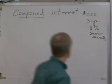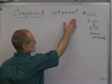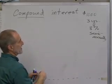Okay, let's do a compound interest problem manually to see how it works. If we borrow $1,000 for three years at 8% interest, compounded semi-annually,